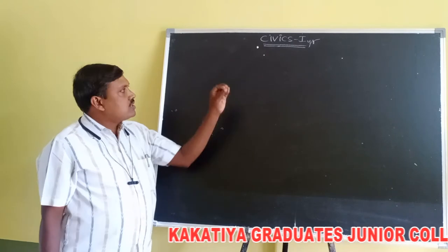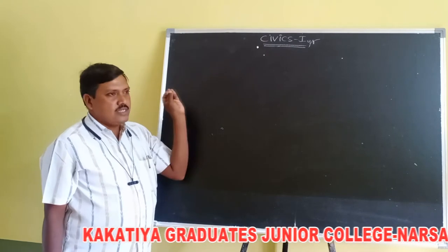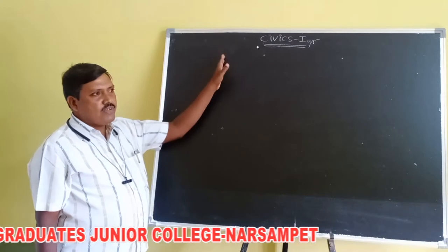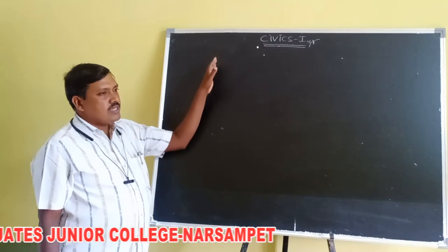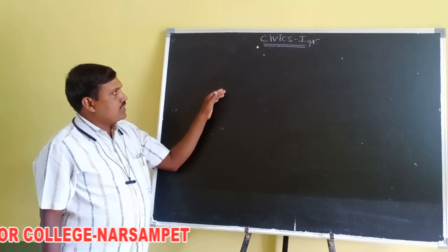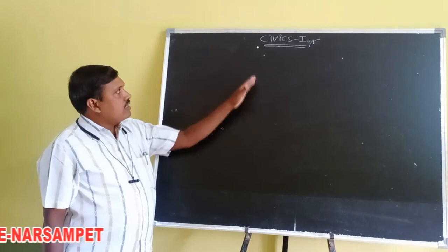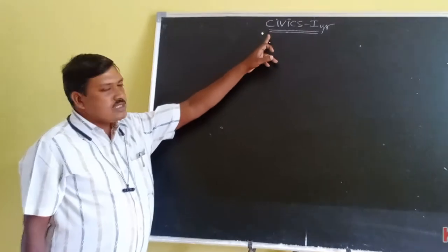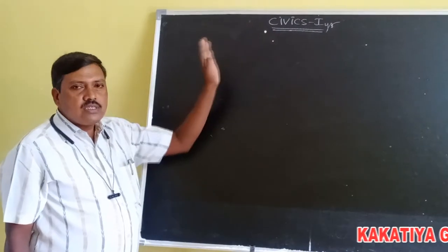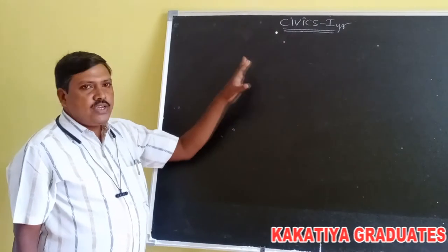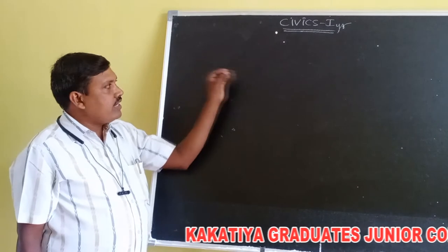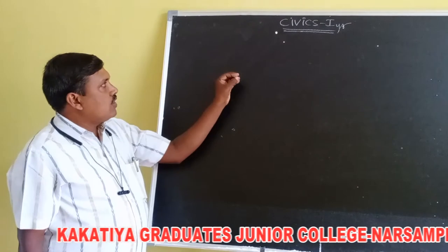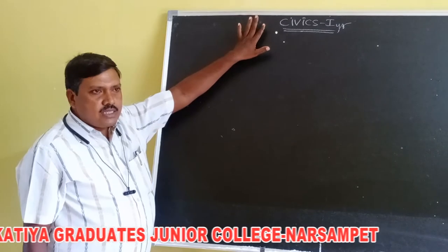In the previous classes you studied social studies, which was divided into four parts: Geography, History, Civics, and Economics. In the first year CEC group, Civics is one of our subjects. So what is meant by civics?